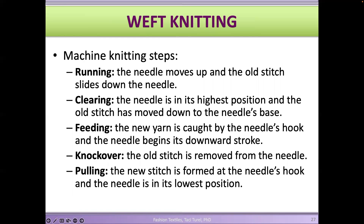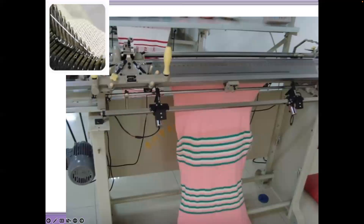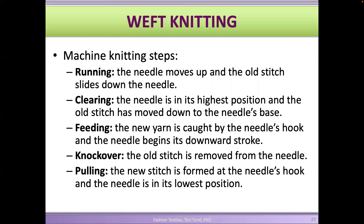These are the steps used to knit fabrics. The first step is the running step — the needle moves up and the old stitch slides down the needle. The clearing step is when the needle is in its highest position. Looking at a flatbed machine, you can see those latch needles going across.